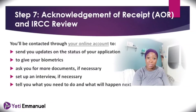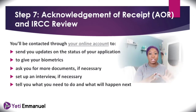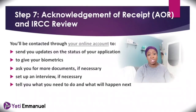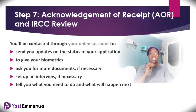Your police certificate must cover every country you've lived in for more than three months in the past 10 years — not just your current country. If you spent only three weeks somewhere on vacation, you don't need a police certificate from there. All these checks are to confirm you're admissible to Canada and haven't committed war crimes or other serious offences. You can also check the IRCC website for things that would make you inadmissible. Your profile will be updated with the status of your application throughout the process.